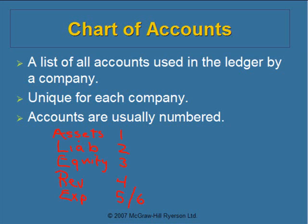The rest of the numbers are unique to the company. For example, a company may have an equipment account. If they were to number it, it would have to start with the number one because one indicates it is an asset. The numbers after that are up to the company — so you could have 301, where three-zero indicates it's an asset and the remaining digits are unique to the company.